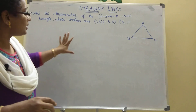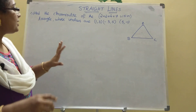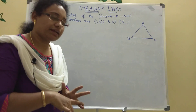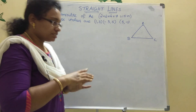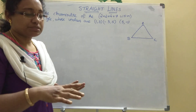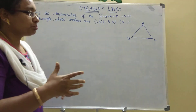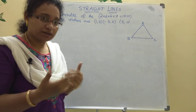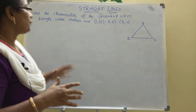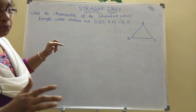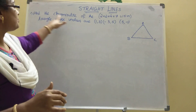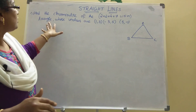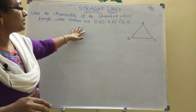In Straight Lines, circumcenter and orthocenter are very important sums. Foot of the perpendicular and image theorem sums are also there. Today I am discussing the circumcenter given the vertices of a triangle.